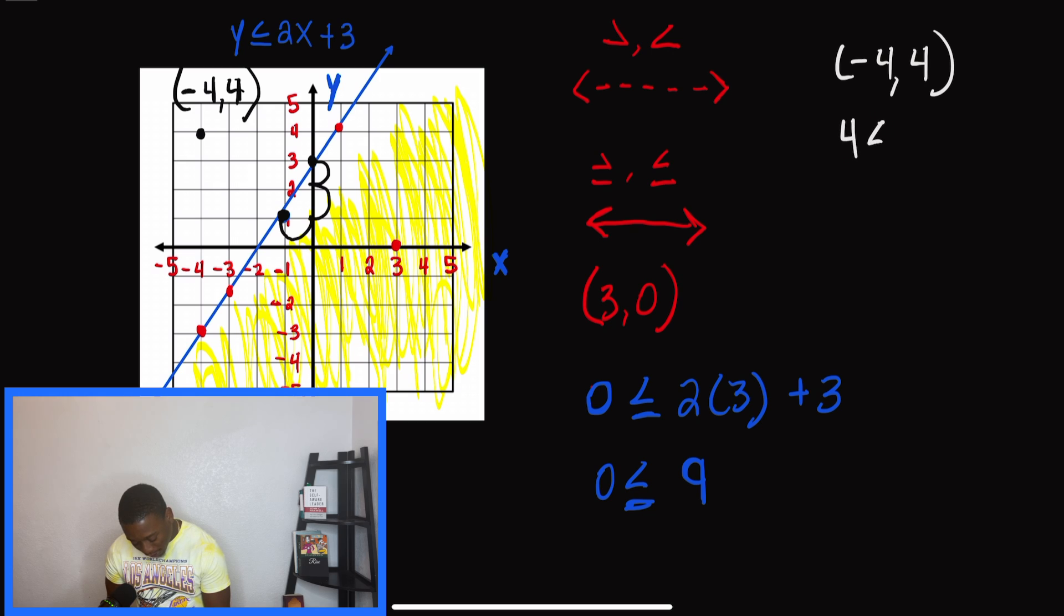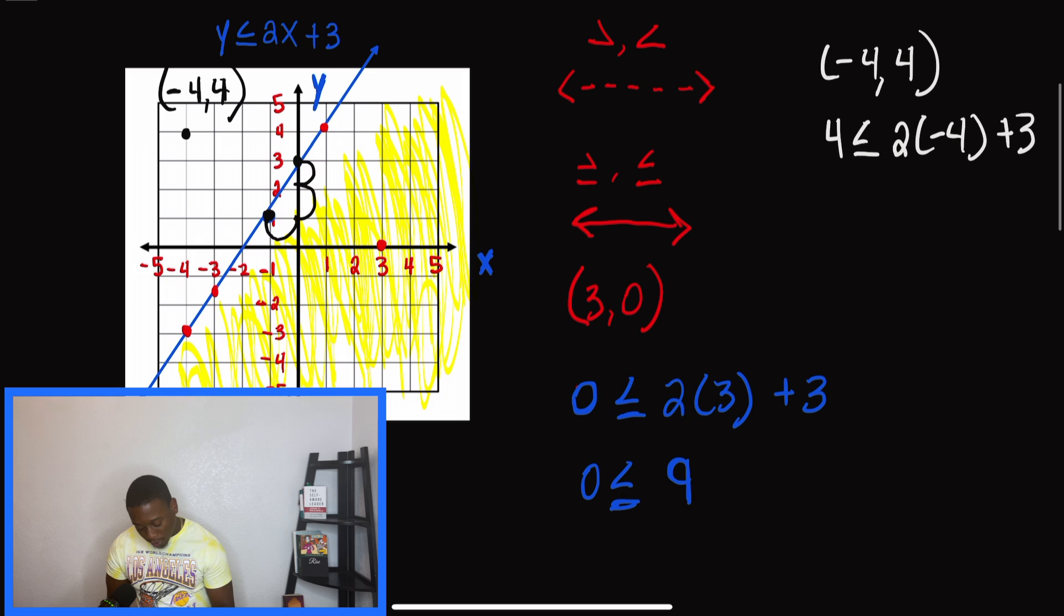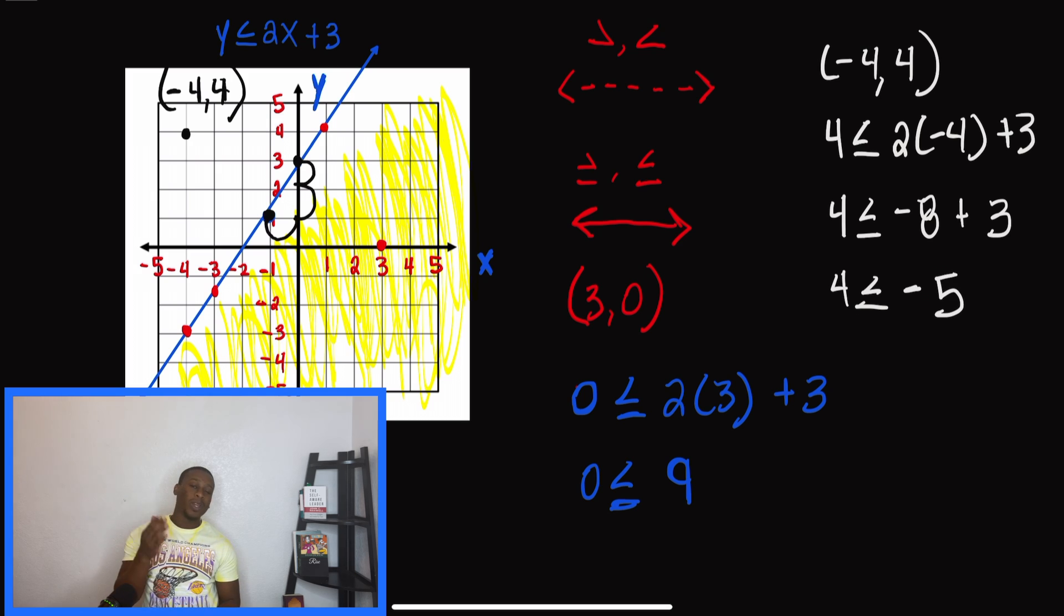So we say 4 ≤ 2 times (-4) + 3. When we calculate this, we get 4 ≤ -5. We know that is not true. Because that's not true, we're not going to shade in the top half of our graph. We would not shade in this part. We would shade in the opposite part.